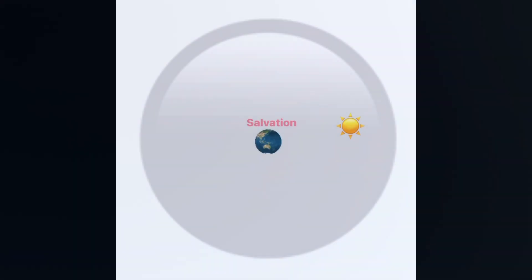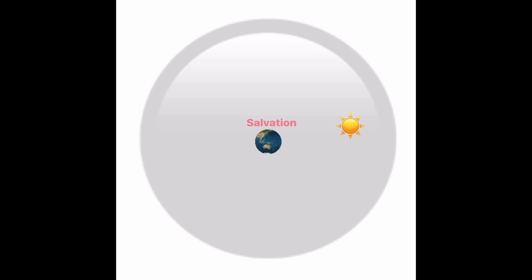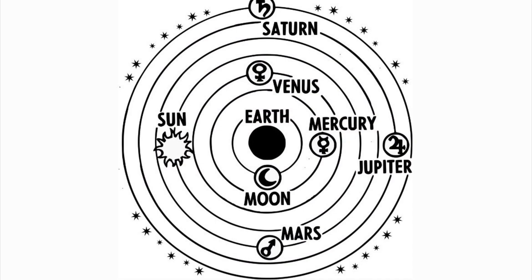Another example, the Earth was the focal point of salvation. Therefore, all other planets, all other beings in the universe had to be revolving around the Earth.